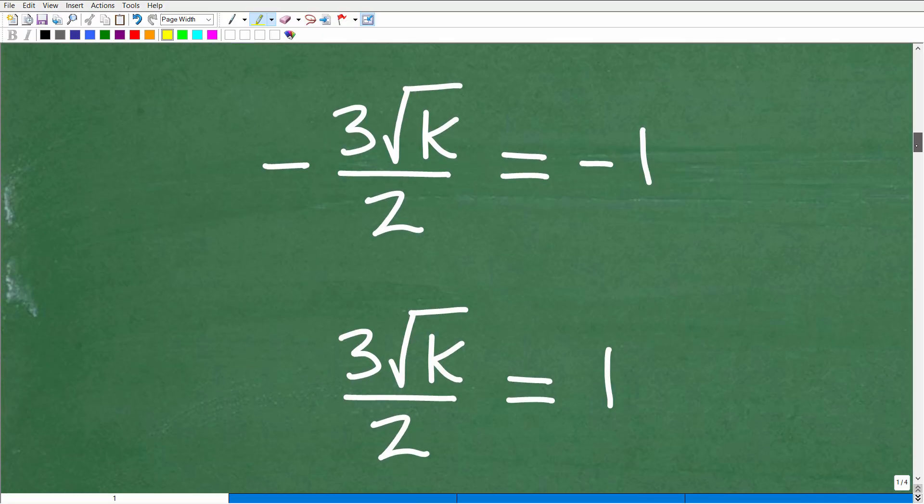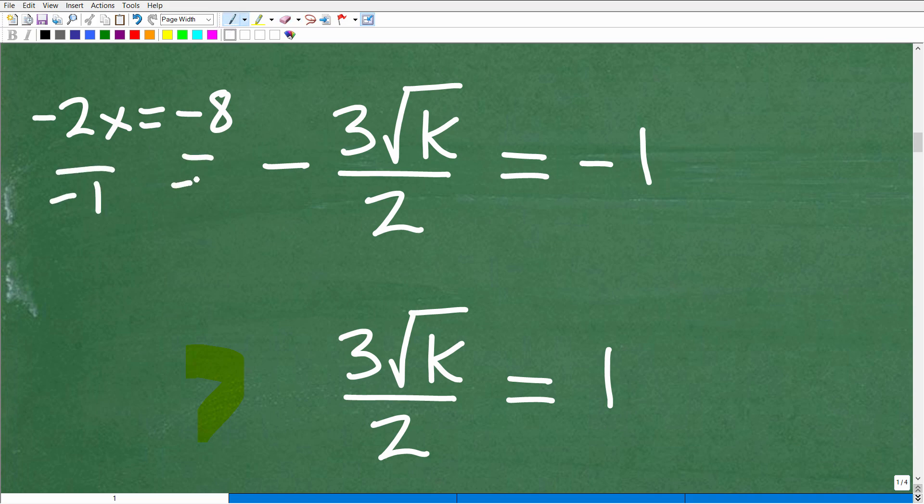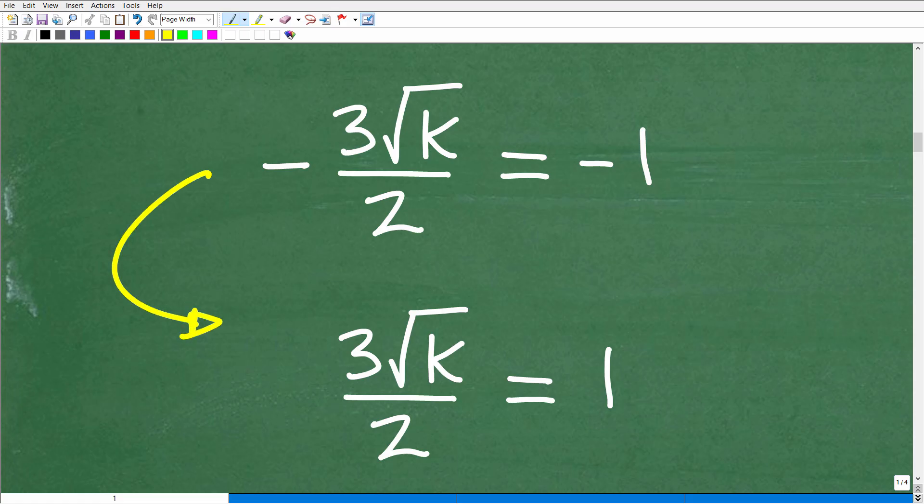The next thing we want to do is recognize that negative 3 times the square root of k over 2 equals negative 1 is the same thing as 3 times the square root of k over 2 equals 1. In other words, there's no need to continue to write these negative signs. We can drop them away. If I divide both sides of the equation by negative 1, it becomes positive. Anytime you can get rid of negative signs in this kind of situation, that's what I encourage you to do. It's one less thing you have to write when solving an equation.